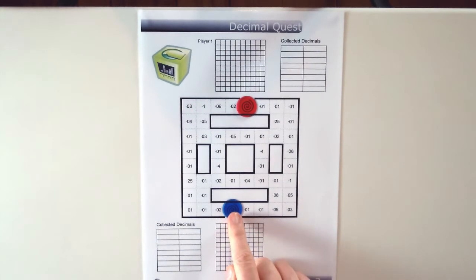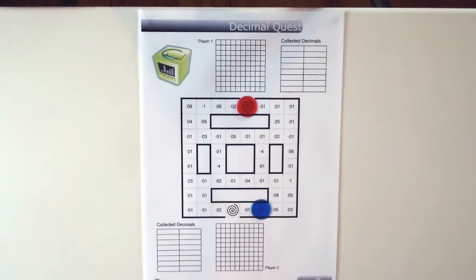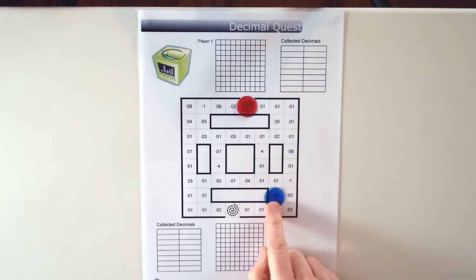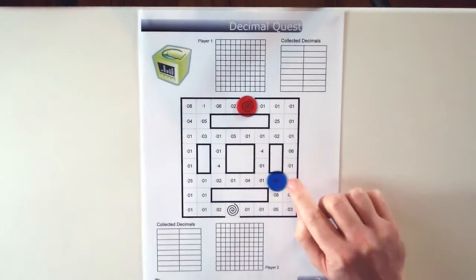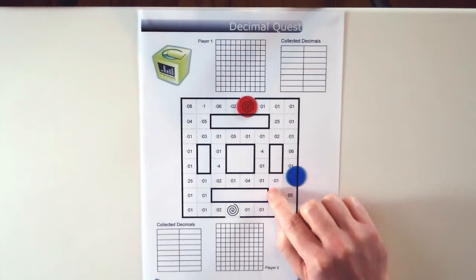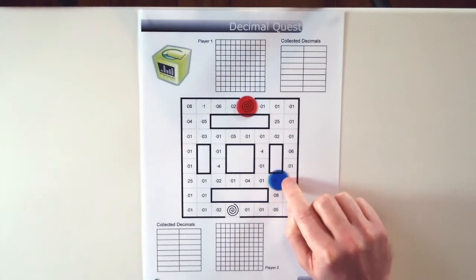So if blue goes first they could move 1, 2 spaces, 3 spaces, anywhere up to 1, 2, 3, 4, 5 spaces. Now the decimal that a player lands on, in this case blue has landed on 0.01, which is a very small decimal.